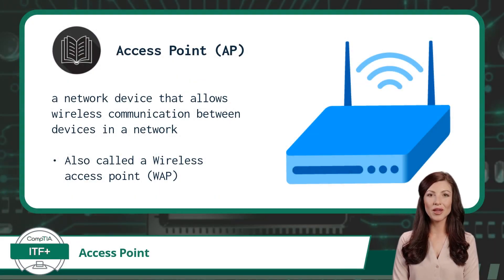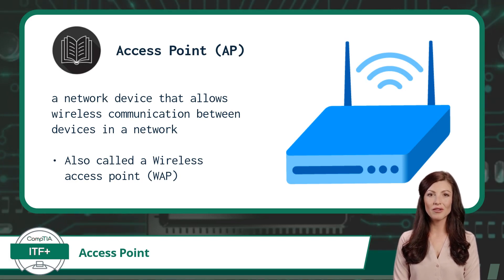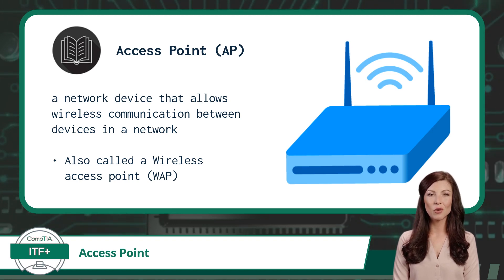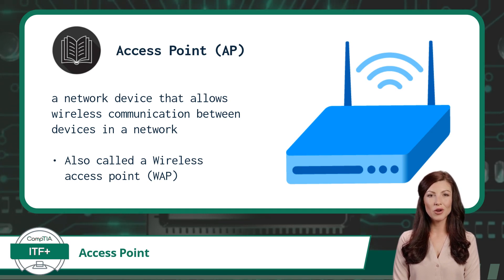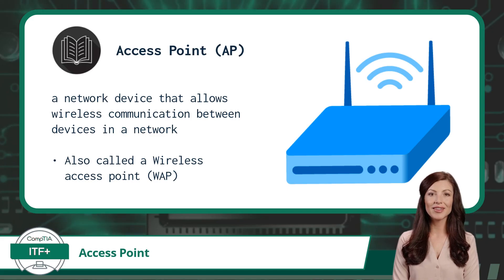In a traditional wired LAN, devices are physically connected using cables and network switches, but in a wireless LAN, we eliminate the need for these cables. This is where wireless access points come into play. A wireless access point, also known as a WAP, is a network device that allows wireless communication between devices in a network.